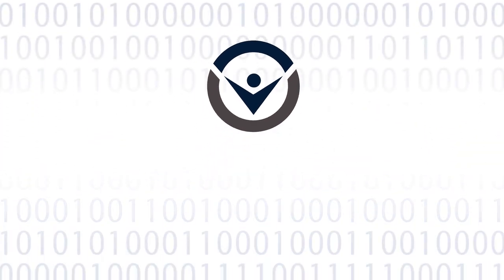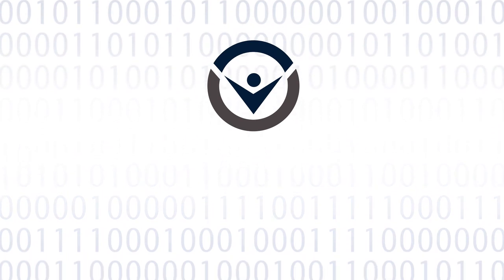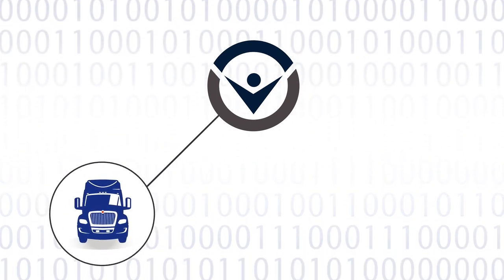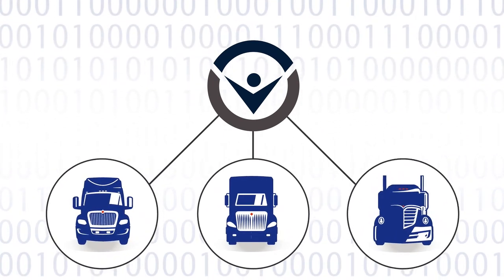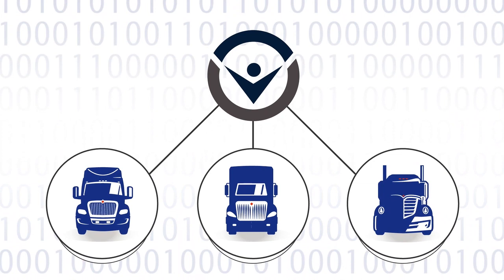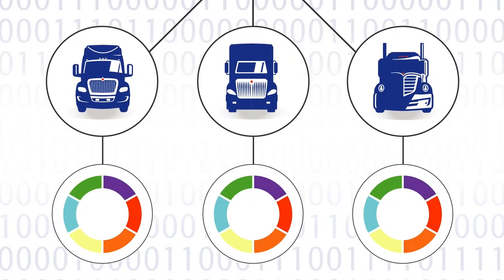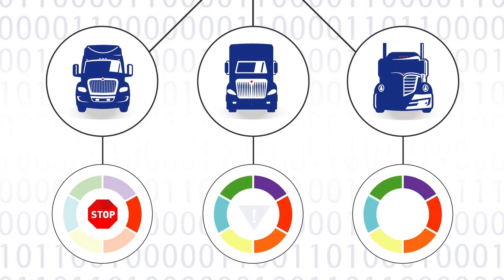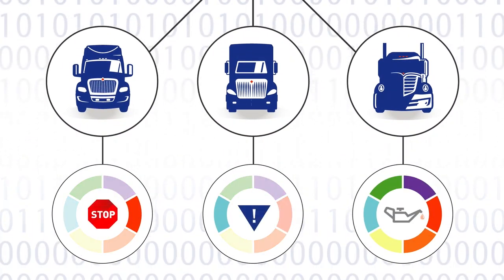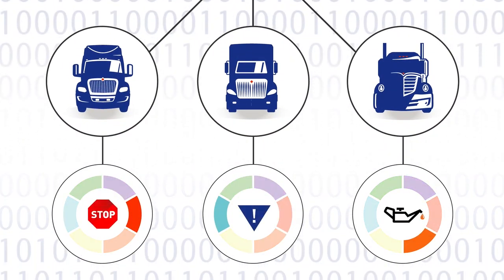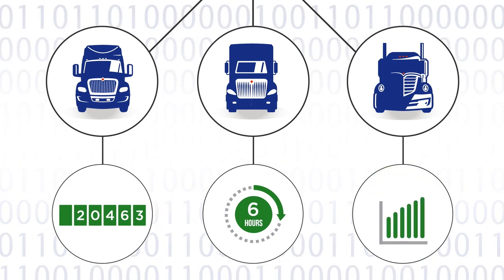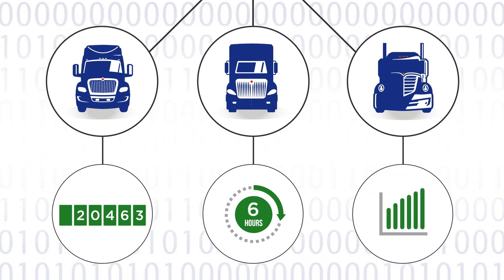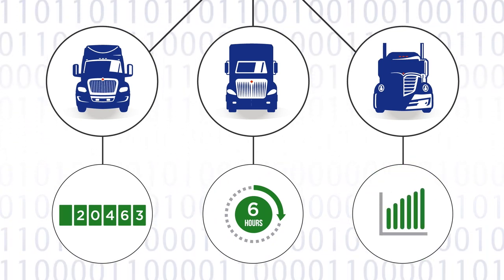Through a factory-installed telematics device on new International LT and RH series and Lone Star models, On-Command Connection delivers insights to dealers and customers that can be used to help increase vehicle uptime and fleet productivity.